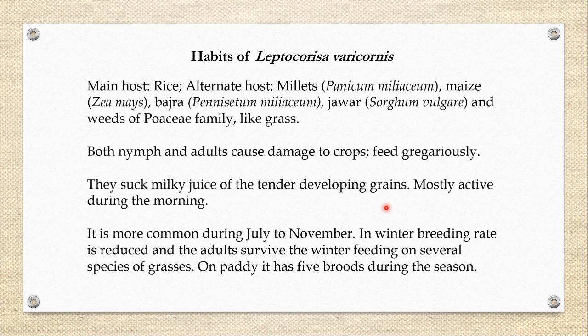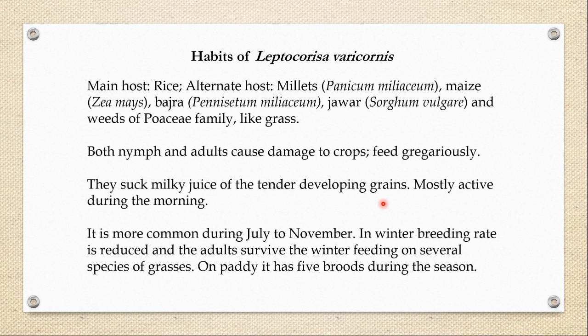The main host of Leptocoryza variconis is rice, but it has many alternate hosts because it can survive on other plants in the Poaceae family. It can attack millets, maize, bajra, jowar, and many weeds such as grasses. Both nymphs and adults cause damage to crops; they feed gregariously, using their piercing and sucking mouthparts to suck the milky juice from tender developing grains. They are diurnal in habit and mostly active during the morning, found more commonly between July and November. In winter, their breeding rate is reduced and since rice is not cultivated in winter in India, they are found in weeds growing near rice cultivation areas.